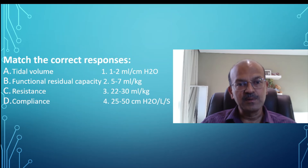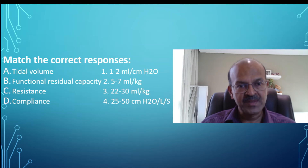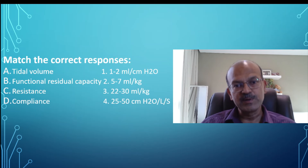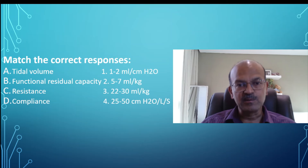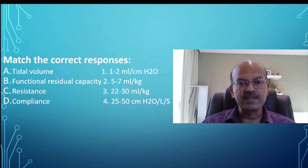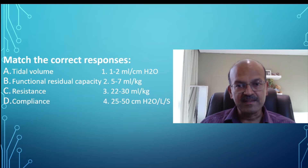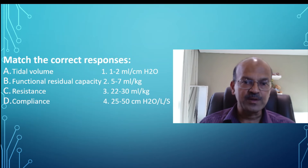The question here requires you to match the values on the right side with the names on the left side. We have tidal volume, functional residual capacity, resistance, and compliance. The values given are: 1 to 2 ml per centimeter water, 5 to 7 ml per kilogram, 22 to 30 ml per kilogram, and 25 to 30 centimeter water per liter per second.